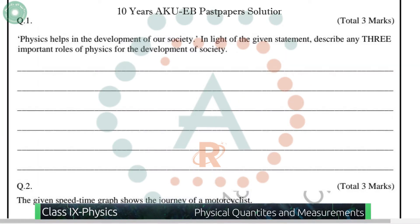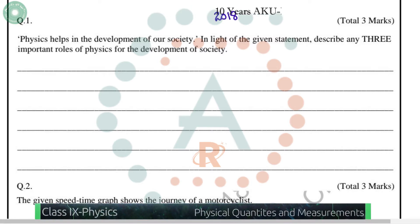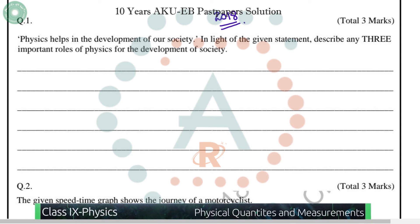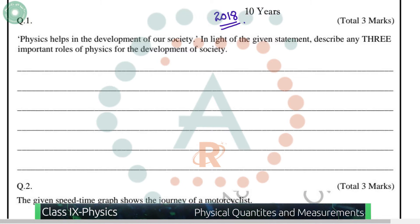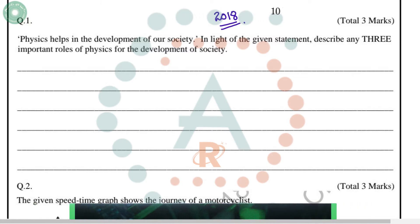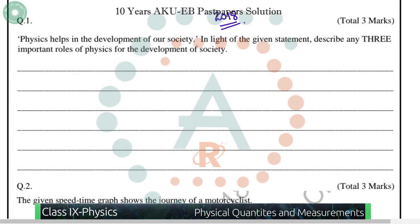Now we have the 2018 Class 9 Physics Paper 2. The question states that physics helps in the development of our society. In light of this statement, we have to write any three important roles of physics in our daily life.